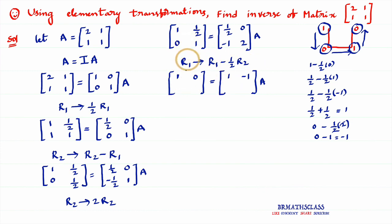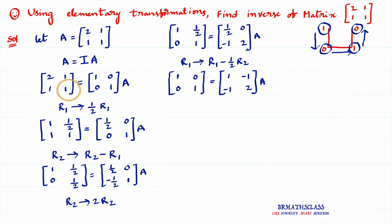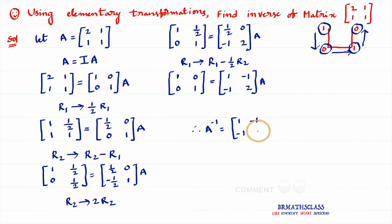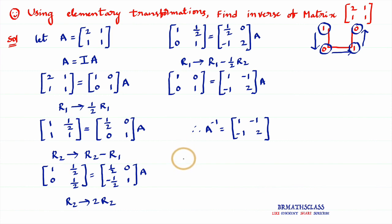No change in row 2, so we write row 2 as usual. We got the identity matrix on the left side. Whatever matrix is present on the right side is the inverse of the given matrix. Therefore, A inverse equals [1, −1; −1, 2]. In this way we can calculate the inverse of a given matrix by using elementary transformations — it just takes a little practice.